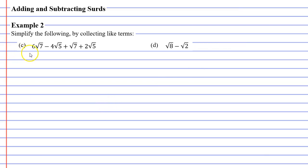Time to move on to question c. Our like terms are 6 root 7 and another root 7, remembering that the root 7 has a coefficient of 1. So we simply go 6 plus 1, which is 7, and keep the surd as root 7. We also have a root 5 term: negative 4 root 5, and adding 2 root 5. Negative 4 plus 2 is negative 2, so we write minus 2 root 5. The final answer is 7 root 7 minus 2 root 5.